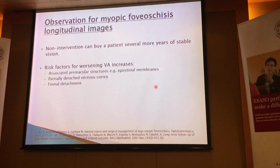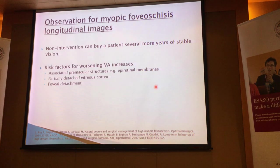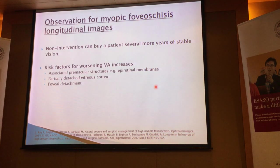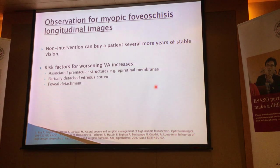Regarding observation for myopic schisis — a lot of patients can be very stable for a very long time. Non-intervention can actually buy a patient many years of stable vision. So don't be in a hurry to intervene. How do you know if a patient is going to do well with observation? There are some risk factors to look out for: things like pre-macular structures, for example an epiretinal membrane. If you have a partially detached vitreous cortex with some areas still attached, these are patients you don't want to see back in eight or nine months — you want to see them in about three to four months.